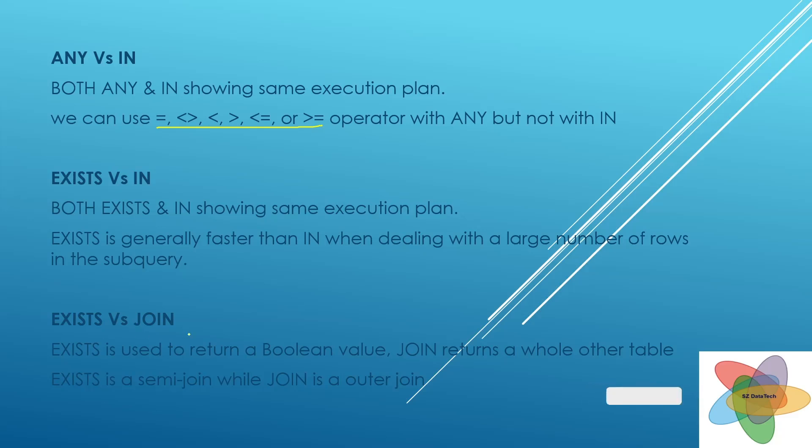EXISTS versus JOIN: again, EXISTS is used to return a boolean value whereas in case of JOIN we will get whole table itself. That is the main difference between EXISTS and JOIN. EXISTS is a semi-join while JOIN is the outer join.